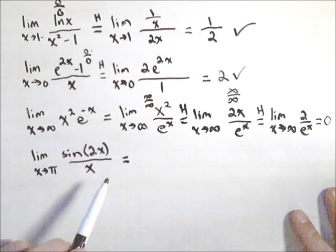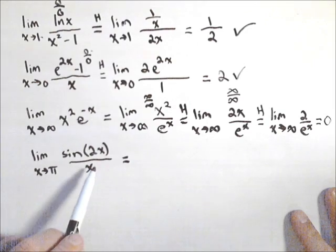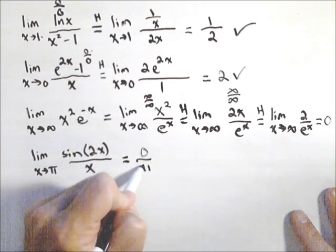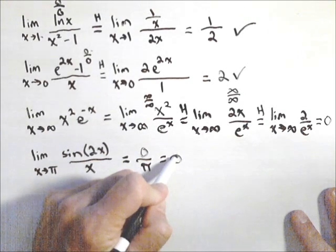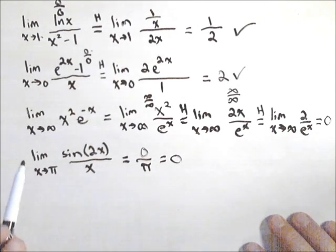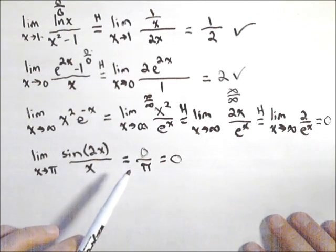This is not a zero over zero, not an infinity over infinity. This is actually not an indeterminate form. If you get zero over a number, your limit is just zero. So always be sure to check that you even need L'Hopital's in the first place.